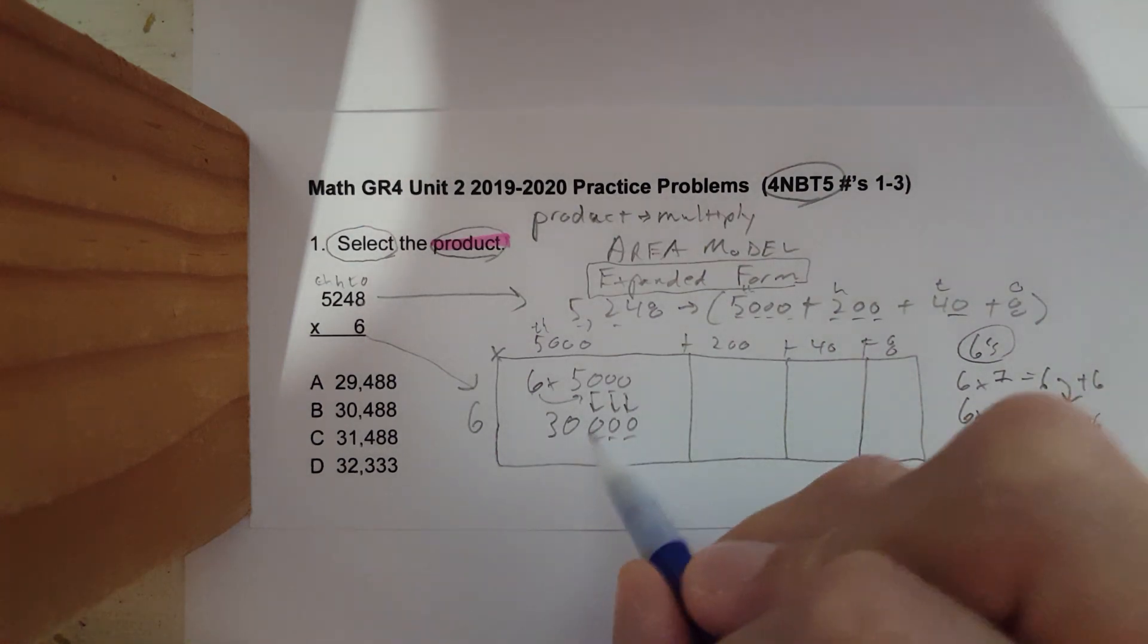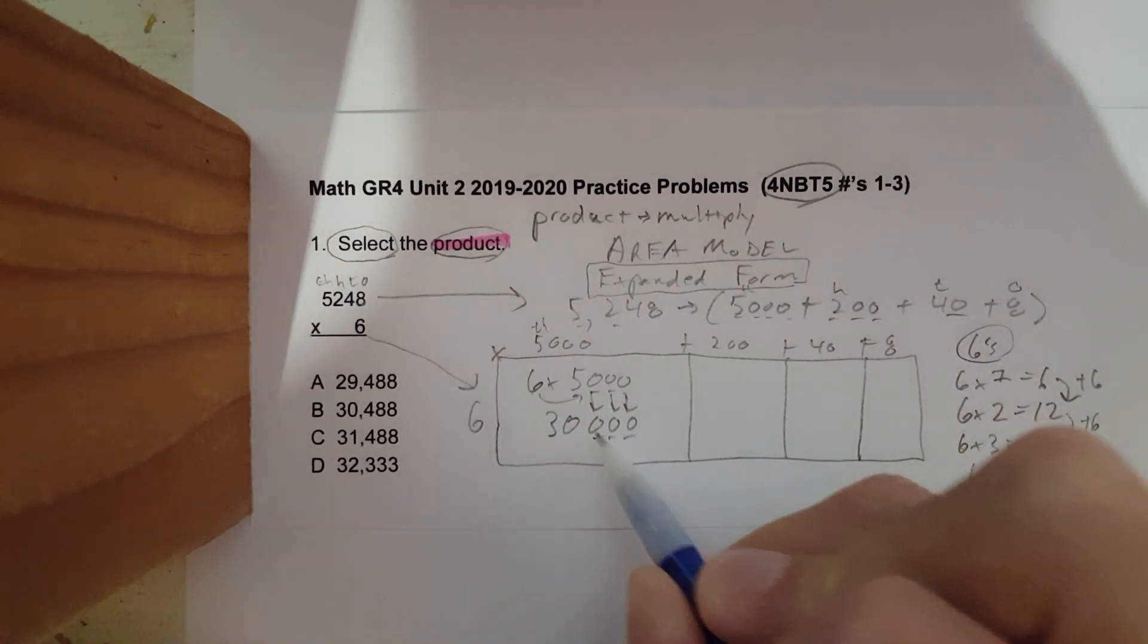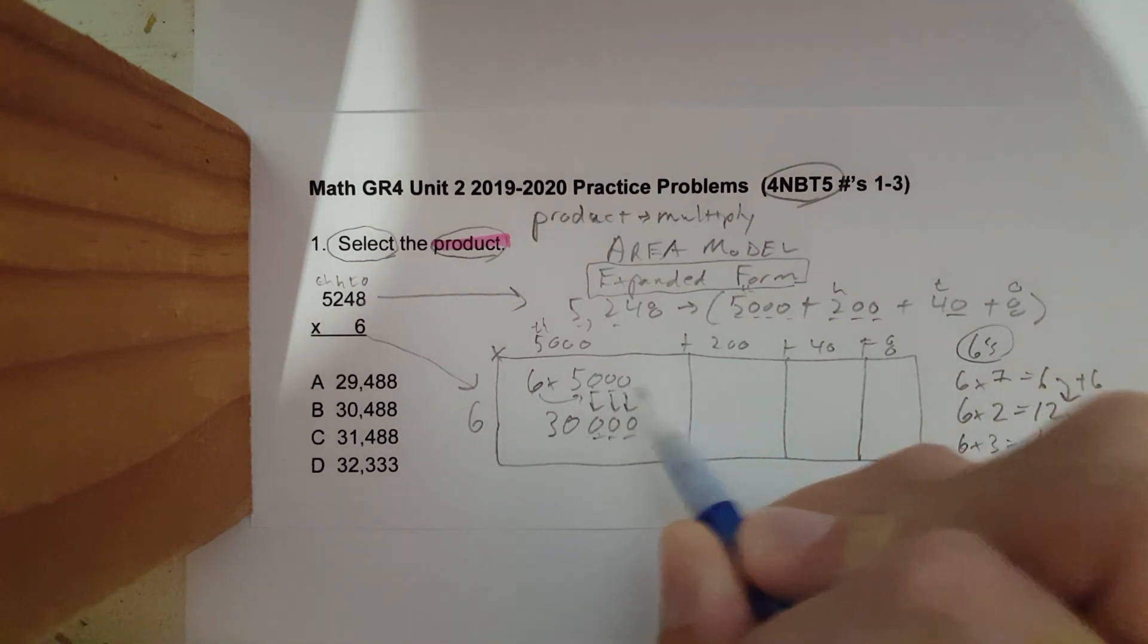A lot of kids make mistakes when they miss the zero. They'll get the six times five, but then they'll maybe write one or two. There are three zeros: one, two, three; one, two, three.